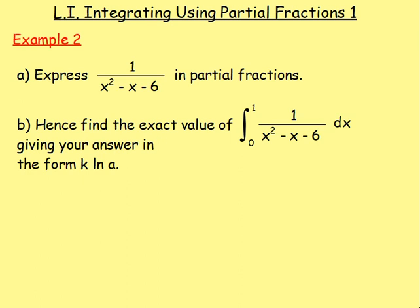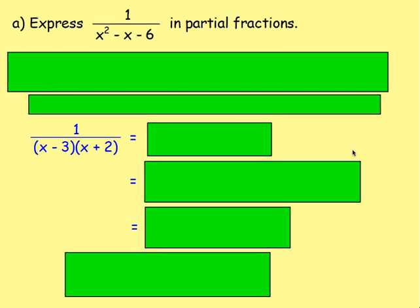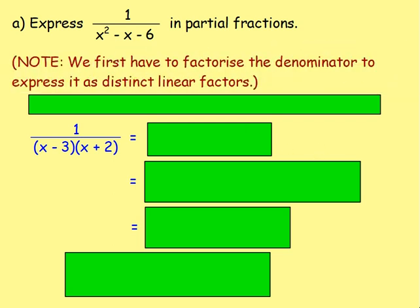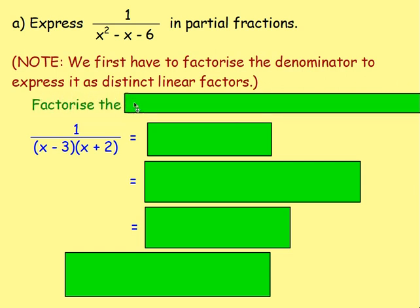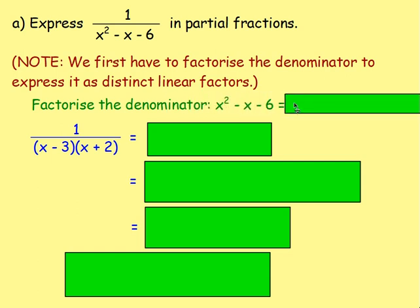Example 2: express 1 over (x² − x − 6) in partial fractions, and hence find the exact value of the integral of that between 0 and 1, giving your answer in the form k·ln(a). First, factorise the denominator as distinct linear factors: x² − x − 6 = (x − 3)(x + 2).